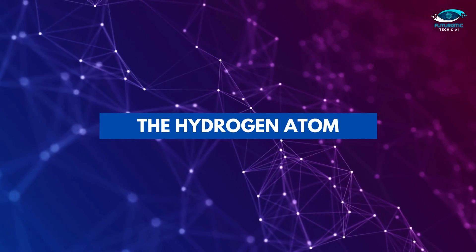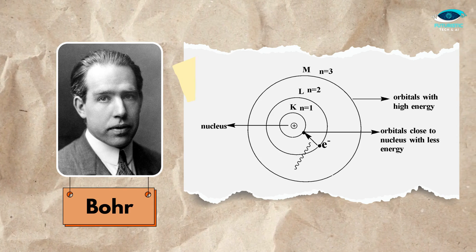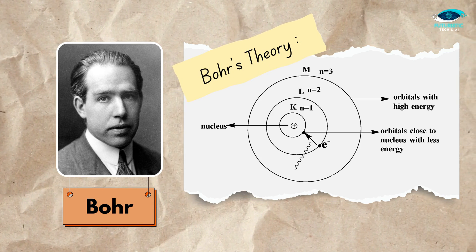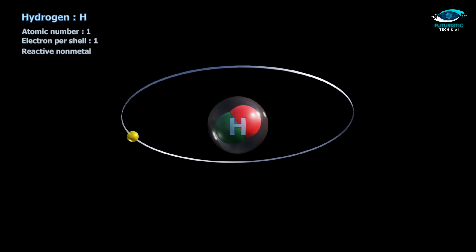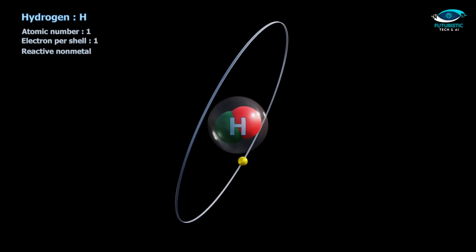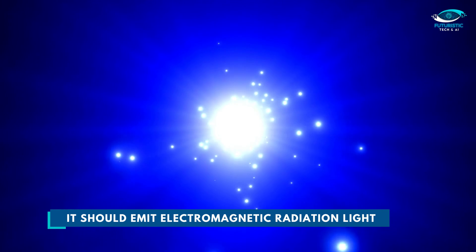The hydrogen atom. We all are familiar with the concept of discrete orbits or energy shells, which Bohr predicted. Classical physics said that because the orbiting electron is constantly changing direction, it should emit electromagnetic radiation light. As a result, the electron should be continually losing energy.